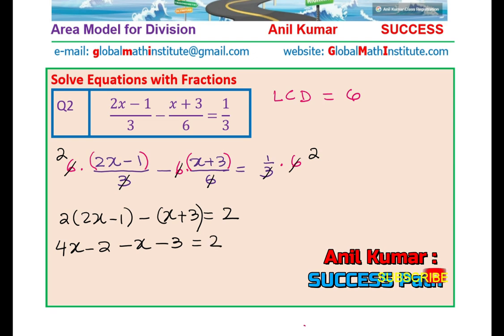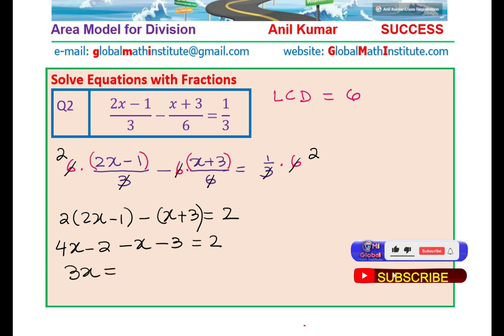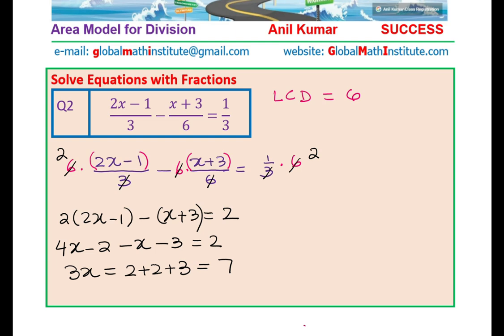Combine the x terms: 4x minus x is 3x. Take the numbers to the right-hand side: 2 plus 2 plus 3, which is 7. So we get 3x equals 7, and therefore x equals 7 over 3. That becomes the solution for this question.